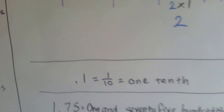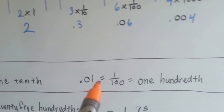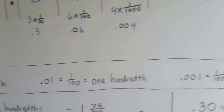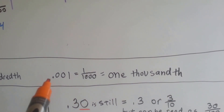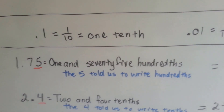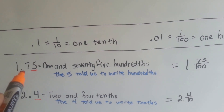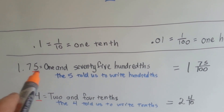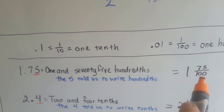When we read and write them: point-one is one-tenth — it's in the tenths place, and it's read as one-tenth. Point-zero-one is one-hundredth, written as one-hundredth — tenths, hundredths. Point-zero-zero-one is equal to one-thousandth — tenths, hundredths, thousandths. So if we look at actual decimal numbers written: one-point-seven-five is 'one and' — say 'and' for the decimal point — seventy-five hundredths, because the five told us to write hundredths. As a fraction, it would be one with seventy-five over a hundred.